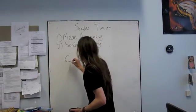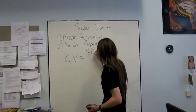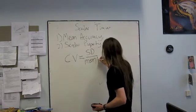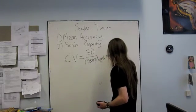So the coefficient of variation is equal to the standard deviation divided by the mean time, or the target time in this case.